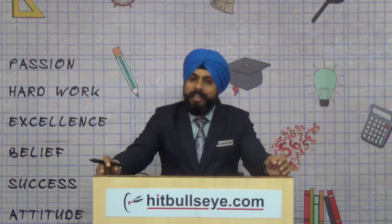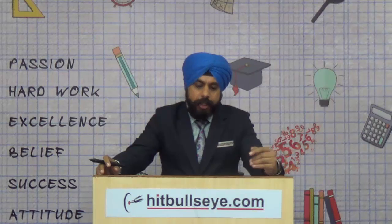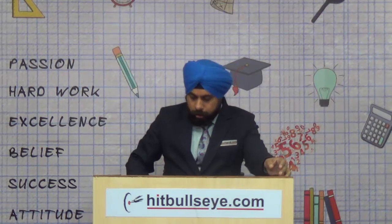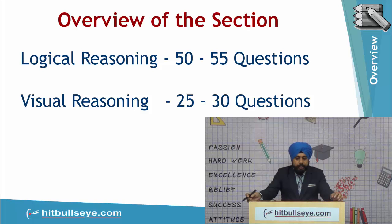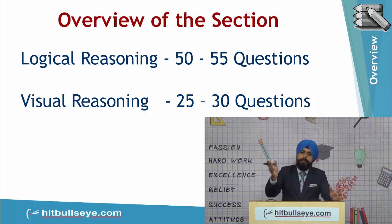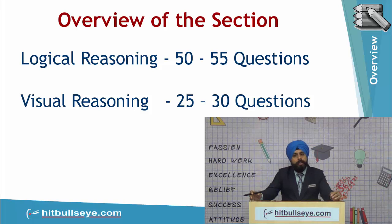Before we discuss a few questions and the strategy for the reasoning section, just have a look at the kind of questions which appear and the number they appear in. The logical reasoning section has 50 to 55 questions in this exam, as the number keeps varying — sometimes 48, sometimes 50, sometimes 52. Similarly, the visual reasoning questions also form 25 to 30 questions in total in this exam.